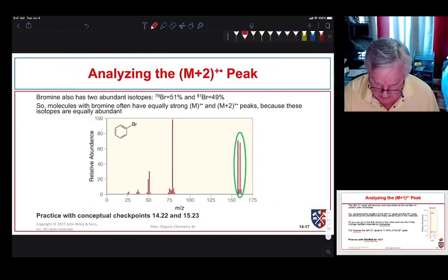There's another very important M plus 2 peak, and that happens to be for compounds that have bromine in them. Bromine has 51% of bromine has an isotope with a mass number of 79. Another significant isotope has two more neutrons in it and has a mass number of 81. So we see a significant number of M and M plus 2 peaks at pretty close to a 1 to 1 ratio because that means that bromine is present in it.